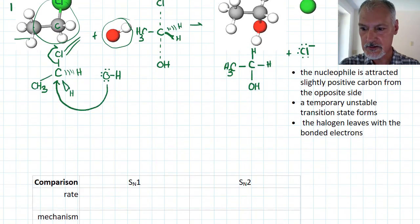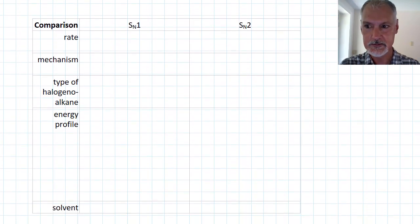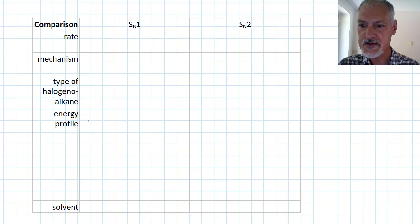So I'm going to summarize the two mechanisms in this little table down here below. So first of all, the type of halogenoalkane. Let's begin at this block here. For SN1, we require tertiary halogenoalkanes. And for SN2, we require primary.